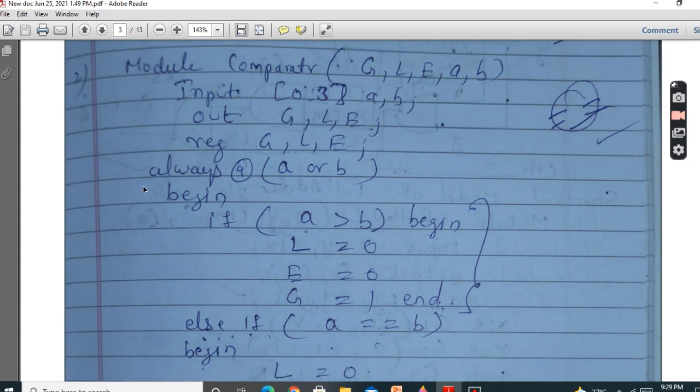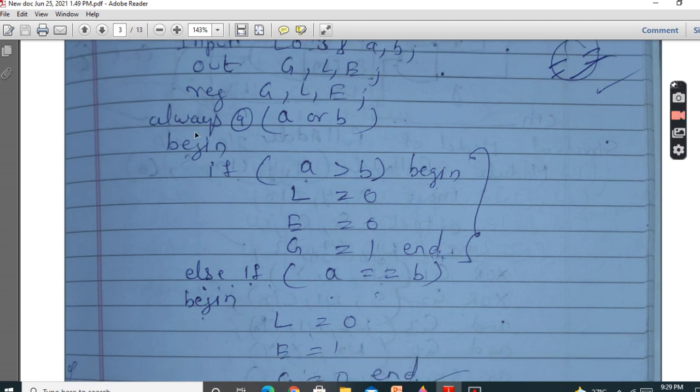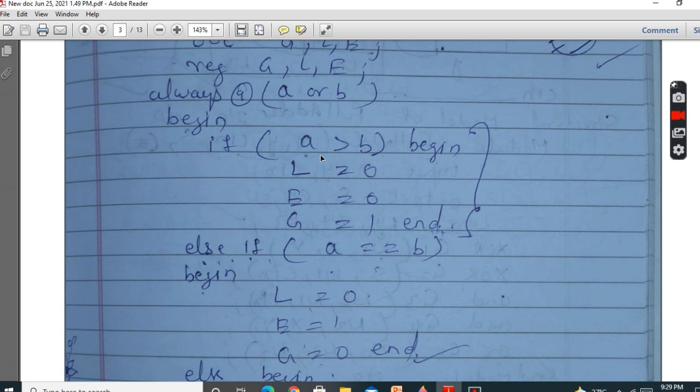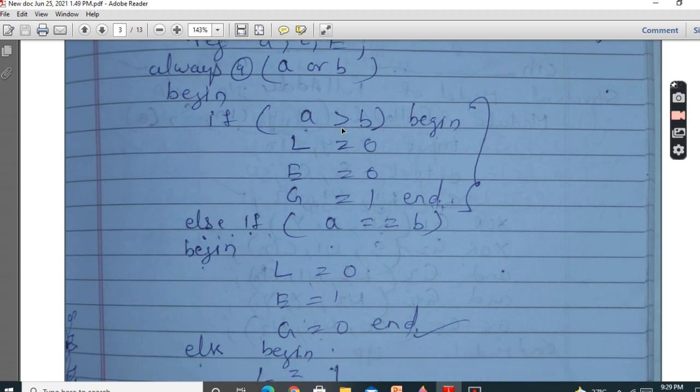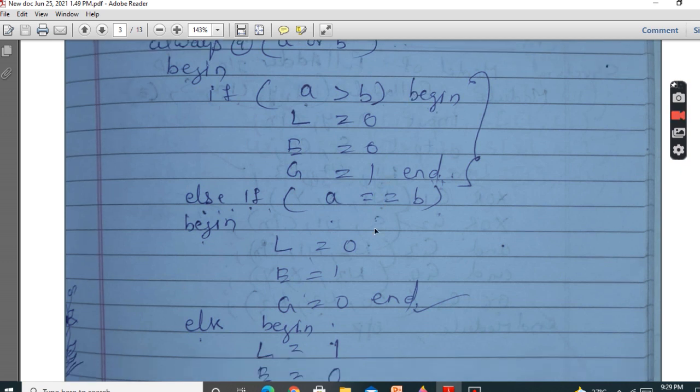Since it is in behavioral model, you should always call this always, sensitivity A or B. And begin, always begin. So how you write. So if A is greater than B, then begin. L should be 0, E should be 0, and G should be 1. So begin end.